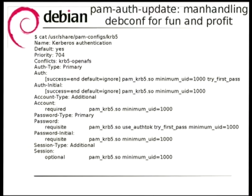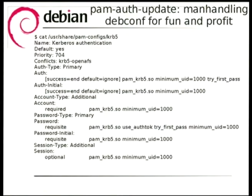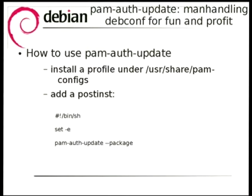You give it a name which is the user-readable name displayed in the debconf interface. Default yes means it's turned on by default. It has a priority which tells PAM-auth-update what order to put modules in the config. We declare conflicts here — if you also have the kerb5-openafs profile available, you can only pick one or the other. Auth type primary I'll explain more about. You see lines which, if you've ever looked at a PAM config, are templates used to generate the actual PAM config. You also have sections for auth, account, password, and session — the four major groups within PAM configuration.